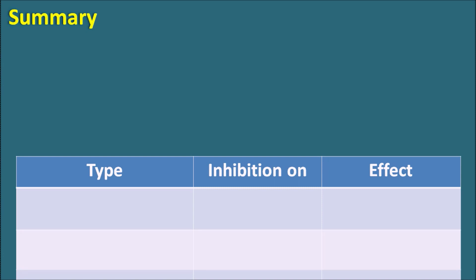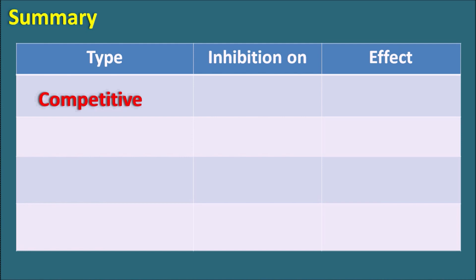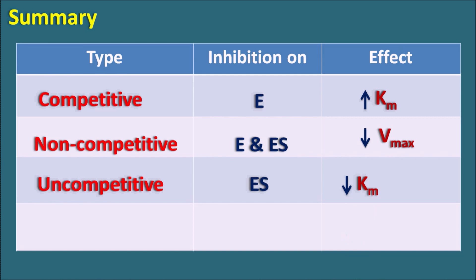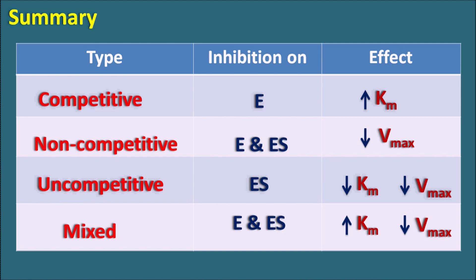Let us summarize the four types of inhibition. In competitive inhibition, there is competition between substrate and inhibitor towards the enzyme — inhibition is on the free enzyme, and Km value is increased while Vmax is unchanged. In non-competitive inhibition, inhibition is on both enzyme and enzyme-substrate complex — Km value is not affected but Vmax is decreased. In uncompetitive inhibition, inhibition is on the enzyme-substrate complex — both Km and Vmax values are reduced. In mixed inhibition, inhibition is on both enzyme and enzyme-substrate complex — mixed inhibition is one type of non-competitive inhibition — but here both parameters are affected: Km is increased and Vmax is reduced. Mixed inhibition produces an effect that is a mixture of competitive and non-competitive inhibition. In this way we can easily remember the different types of enzyme inhibition and their effects on Km and Vmax values.